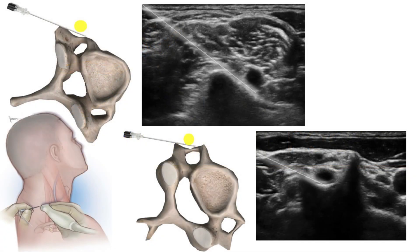The targeted hypoechoic nerve is identified within the intertubercular groove of the corresponding transverse process with its underlying bony acoustic shadow. Once the needle tip is positioned in the posterior circumneural sheath between the nerve and the posterior tubercle, outside the intervertebral foramen, under real-time ultrasound guidance, 1 ml of local anesthetic is injected.